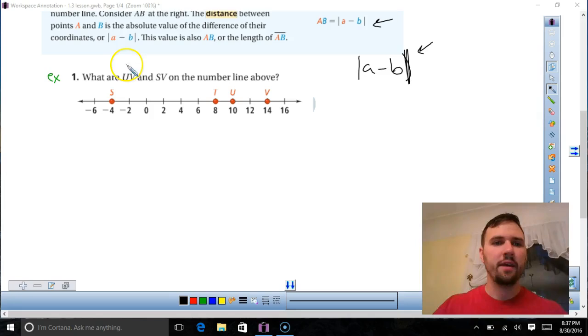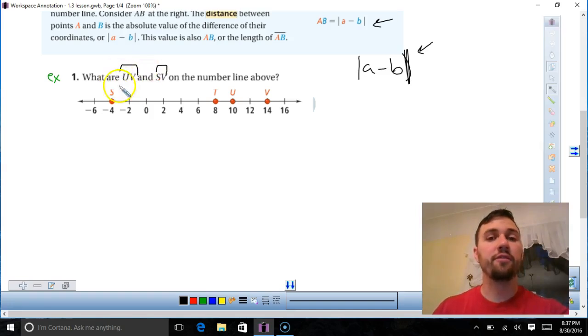Let's look at some examples. They're asking for UV and SV. UV, there's no line on top of it, which means they want the length of UV. I'm going to look down here. I see U is at the point 10. V is at the point 14. Now if you use the book definition, you do 10 minus 14, absolute value of that. So 10 minus 14 is negative 4. Absolute value of negative 4 is 4. That's not the way I roll.